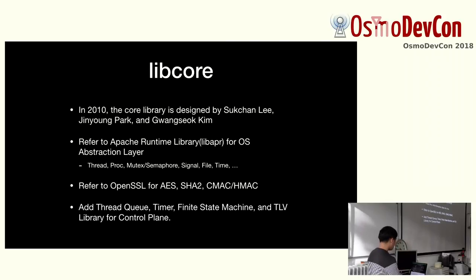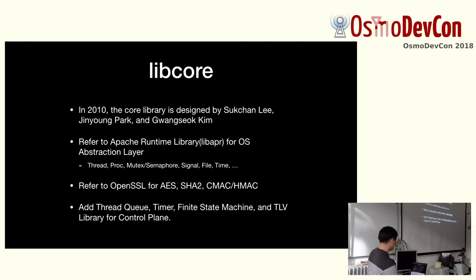I started using the APR — Apache Runtime Library — for OS abstraction layer functions such as threading and so on. For OpenSSL, it's a bit inconvenient to use directly, so we created some simple wrapper libraries.